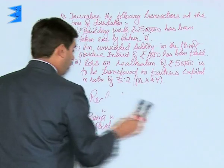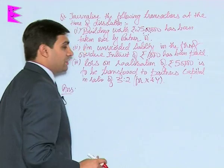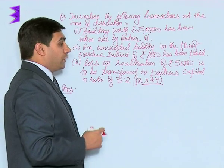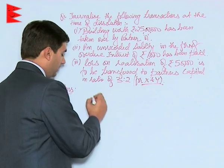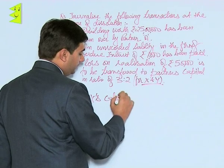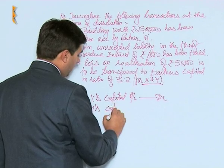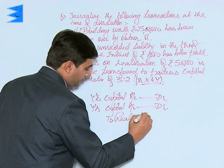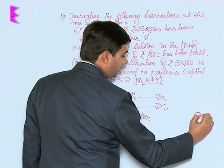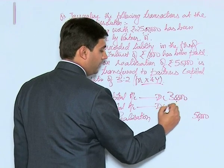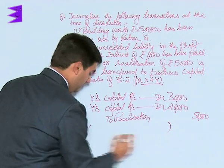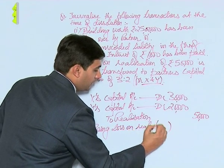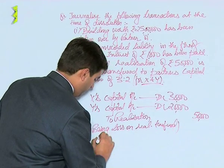Coming to the third entry: the loss on realization of rupees 50,000 is to be transferred to partners' capital accounts in the ratio of 3:2 for X and Y. There is a loss of 50,000 that has to be borne by the partners. The entry would be X's capital account debited and Y's capital account debited to realization account — that is 50,000 in the ratio of 3:2, meaning 30,000 for X and 20,000 for Y. The narration would be: being loss on realization transferred to partners' capital accounts.